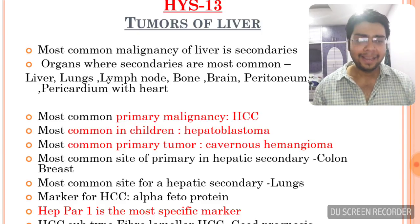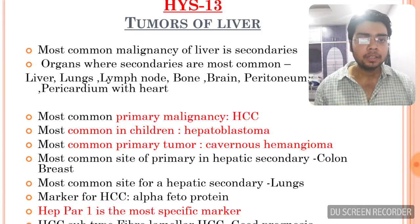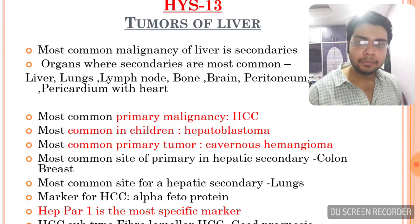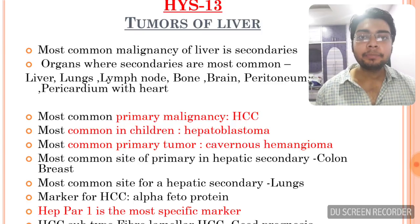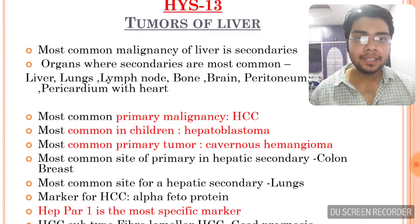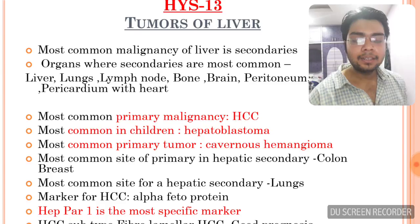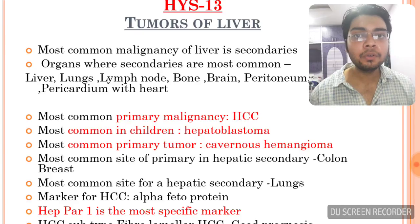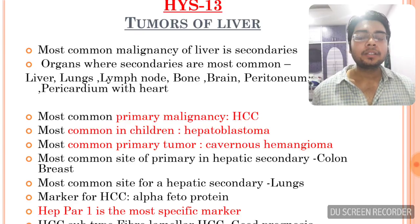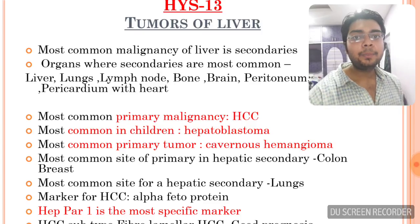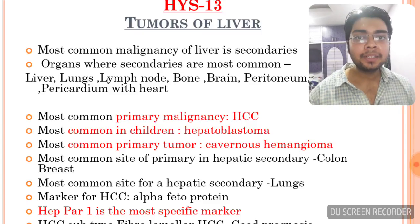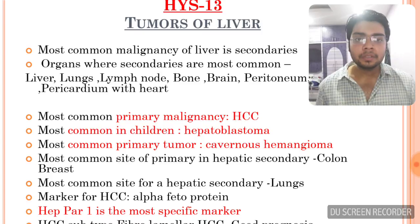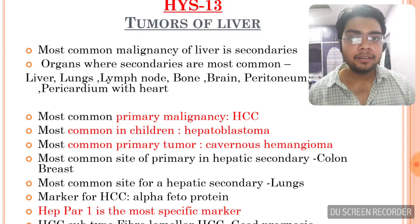Since secondaries are the most common tumors in the liver, the primary must come from somewhere. The most common site of primary in cases of hepatic secondary is from the colon, and then breast. So colon is the primary giving a metastatic focus on the liver as a secondary. And if the liver itself gives a secondary, it will go to the lungs.